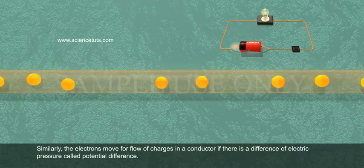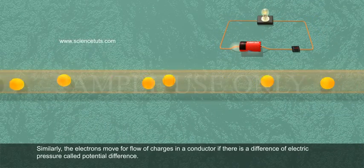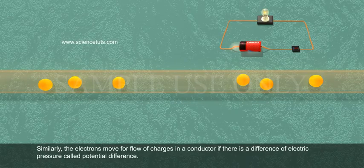Similarly, the electrons move for flow of charges in a conductor if there is a difference of electric pressure called potential difference.